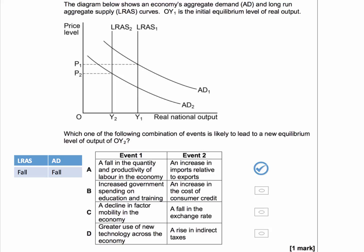But let's check the rest of the answers just to make sure. Increased government spending on education and training is likely to increase aggregate supply. An increase in the cost of consumer credit, higher interest rates, for example, is likely to reduce aggregate demand. So there we have a rise in AS and a fall in AD. Not quite right.